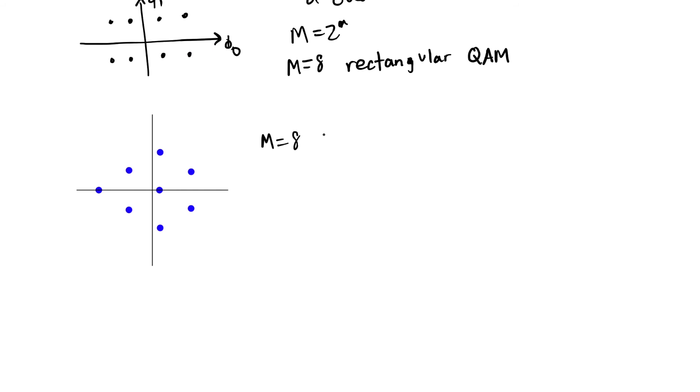We can also arrange constellation points in other ways. Again, note that all of these constellations are centered at zero. That is the average of the m symbol vectors is zero. Here you can see that this center point is not at the origin because this point here on the left would make it unbalanced. It would make it have a non-zero center if I were to put this point at the origin. So that's why it's shifted a little bit to the right. We'll talk about average symbol energy in another video segment.